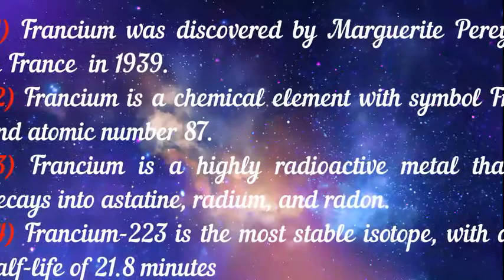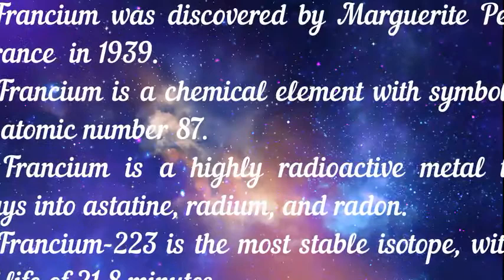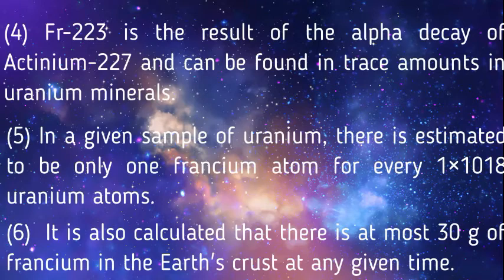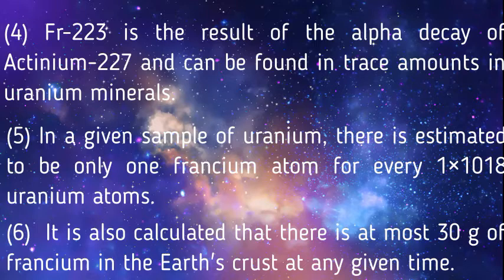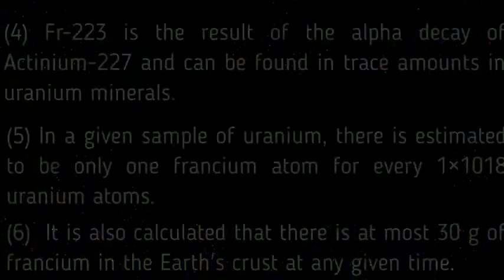Francium-223 is the most stable isotope with a half-life of 21.8 minutes. Francium-223 is the result of the alpha decay of actinium-227 and can be found in trace amounts in uranium minerals. In a given sample of uranium there is estimated to be only one francium atom for every 1×10^18 uranium atoms. It is also calculated that there is at most 30g of francium in Earth's crust at any given time.